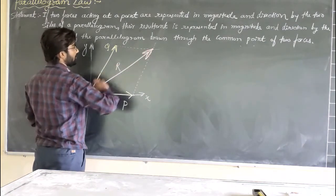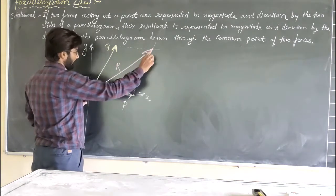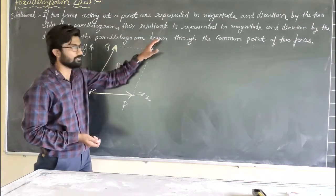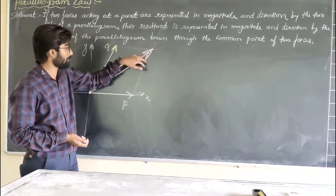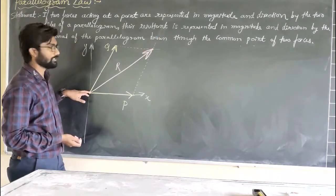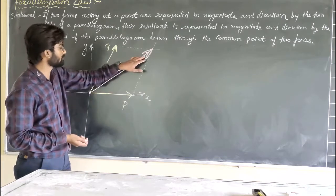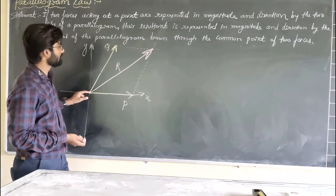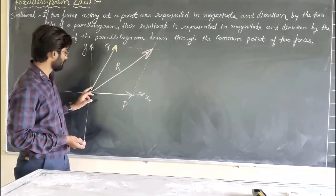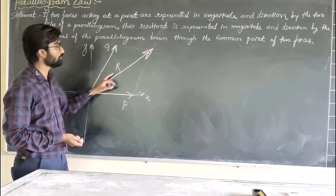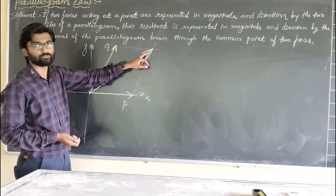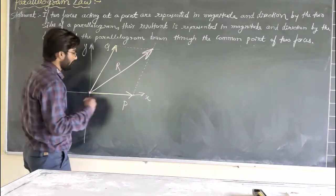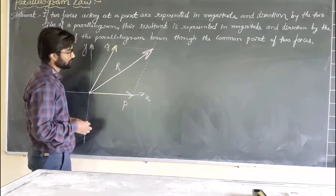The direction of the resultant should be away from the common point. This shows the resultant moving in the first quadrant. If you make a mistake in showing the direction, you might show the resultant moving in the third quadrant, which is a wrong representation. Always ensure the direction of the resultant is away from the common point — the direction arrow on the diagonal should point away from that point.